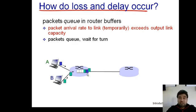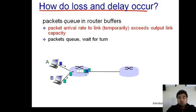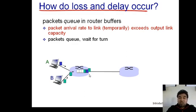That queuing delay for the second packet equals the transmission delay of the first blue packet. Recall that transmission delay is the time required by the router to transmit all the bits of a packet into the link, and its formula is L/R — where L is the number of bits in the packet and R is the transmission rate of the link.